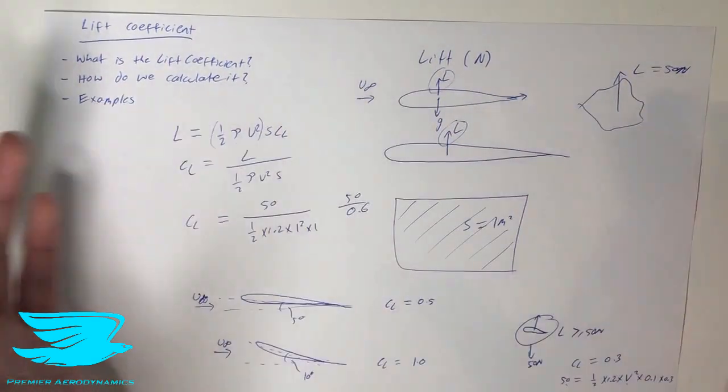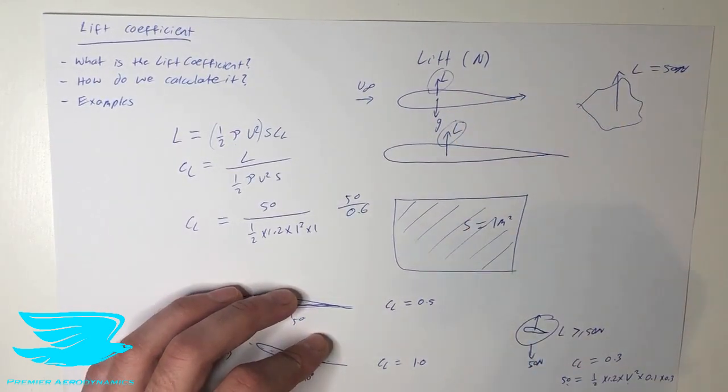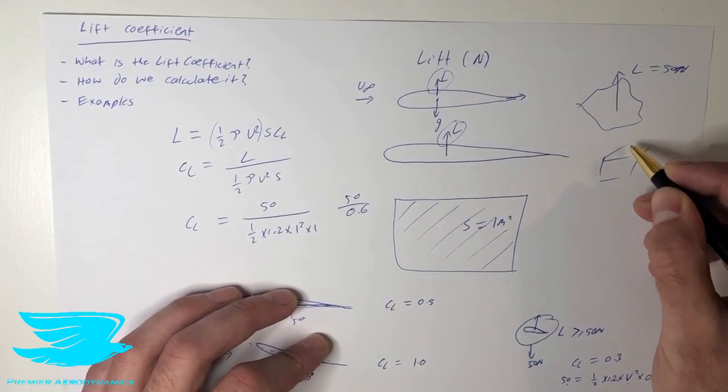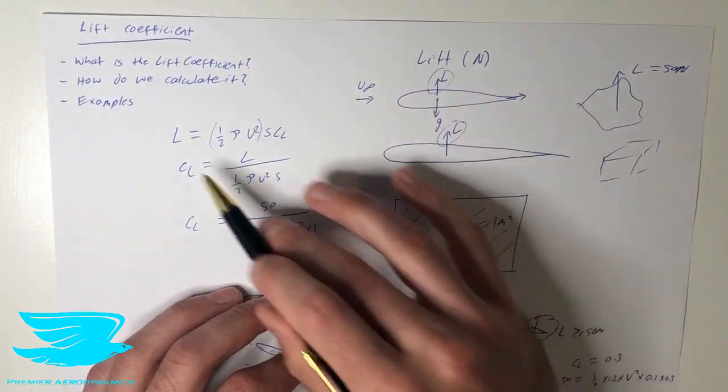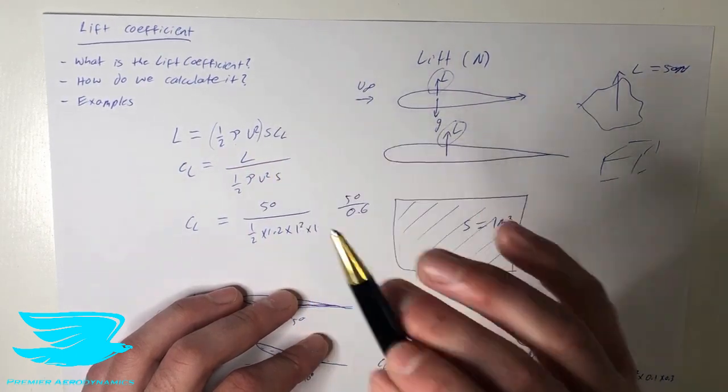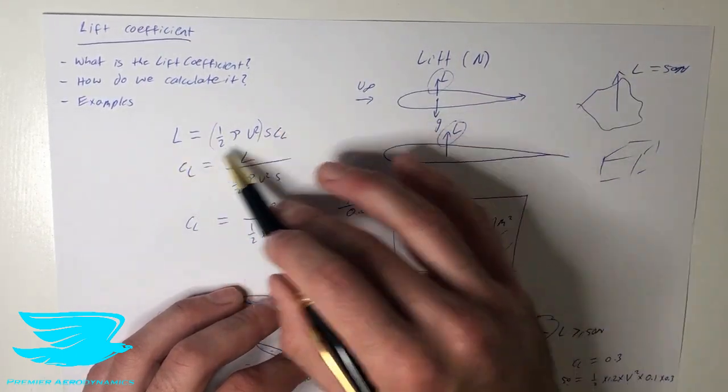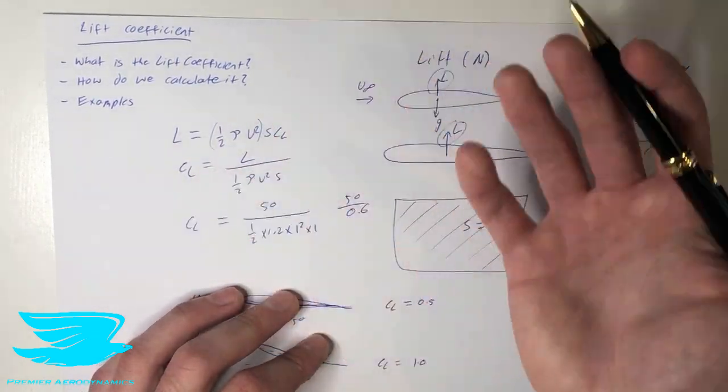And this allows us to compare all different objects from an airfoil or hydrofoil to a weird shape like this, to a cube, to whatever. And we calculate it through this equation here, half times the density times the velocity squared times the reference area times the lift coefficient equals the lift. So we can rearrange this equation to get any of the terms. As long as we know all of them except one, we can calculate the other one.